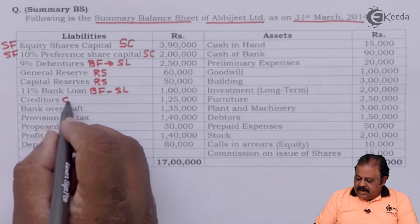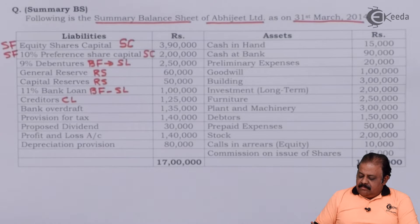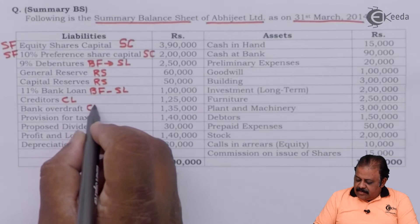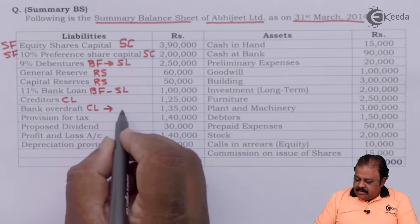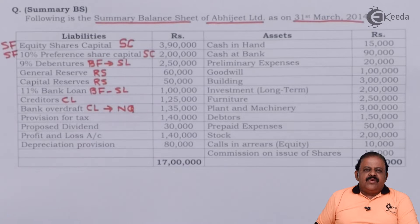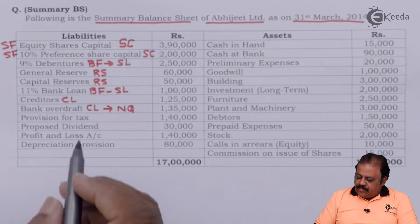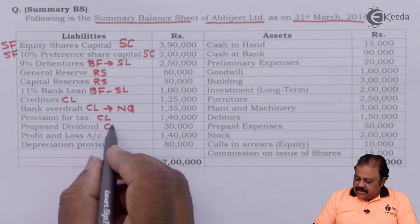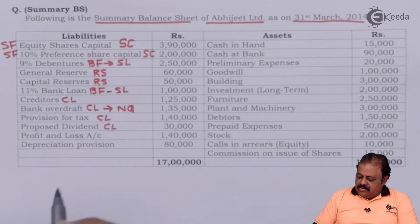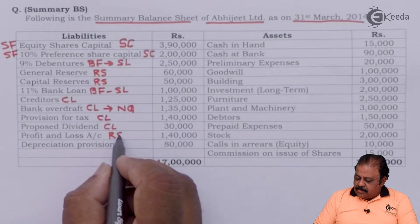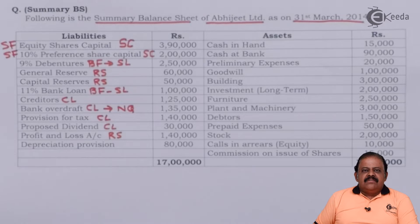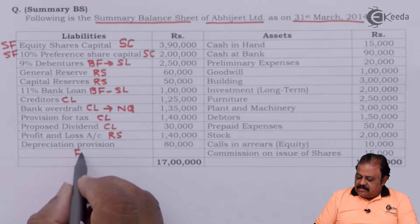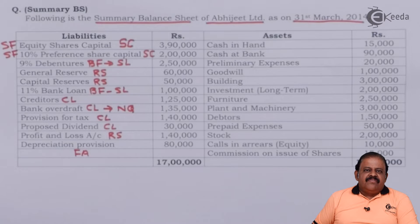Creditors is a current liability. Bank overdraft is also a current liability but it is non-quick, meaning we are not required to settle this liability in a very short period. It is an arrangement with the bank and therefore it can be enjoyed in the long run also. Provision for tax is a current liability. Proposed dividend is also a current liability.